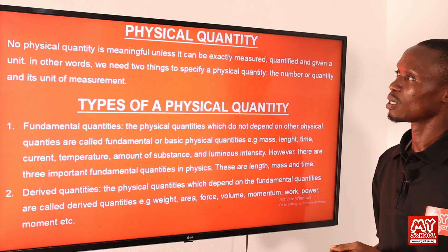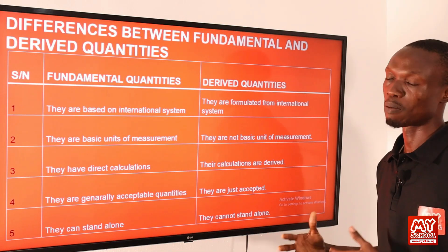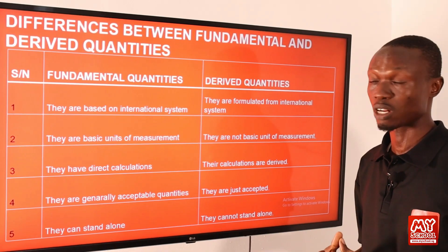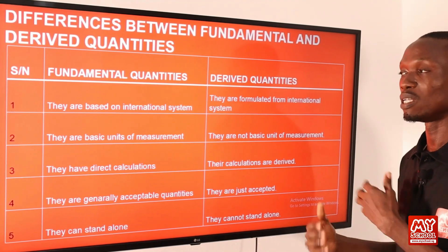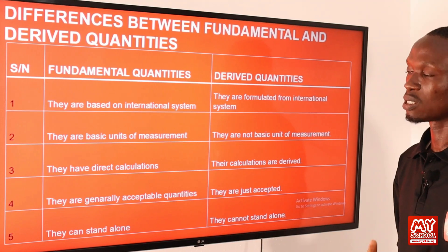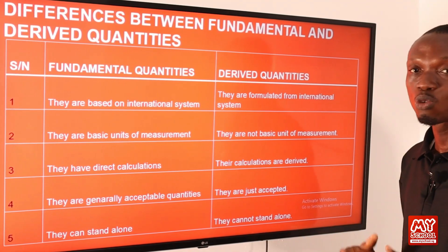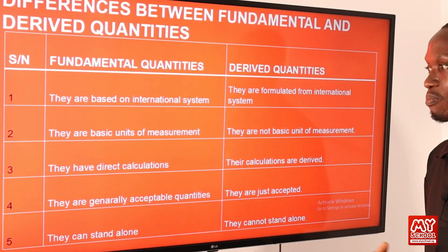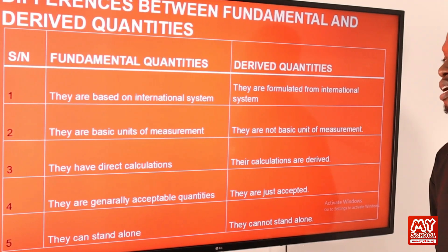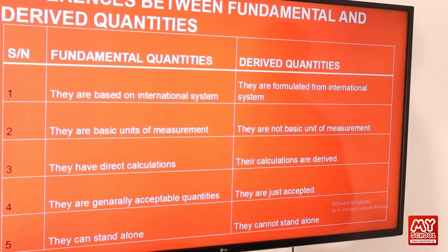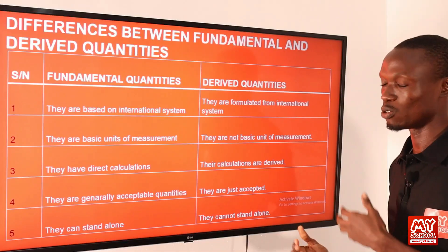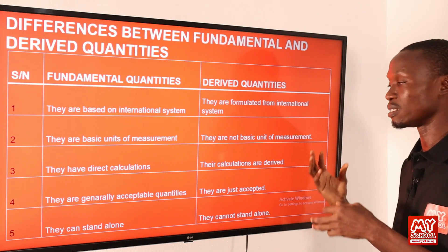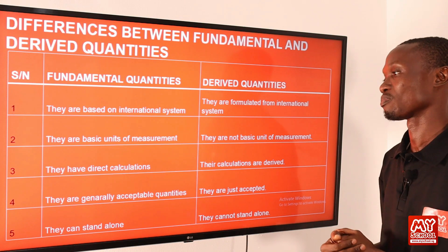So let's move over to the slides to see the difference between fundamental and derived quantities. Number one: fundamental quantities are based on international system, whereas derived quantities are formulated from the international system. Number two: the fundamental quantities are the basic unit of measurement, whereas the derived quantities are not the basic unit of measurement. Number three: fundamental quantities have direct calculations, whereas for derived quantities, their calculations are derived — you need to combine fundamental quantities or a fundamental quantity and a derived quantity to perform their calculation.